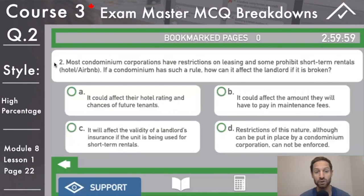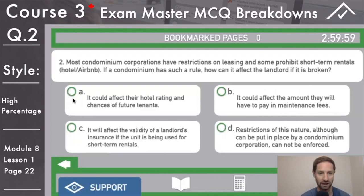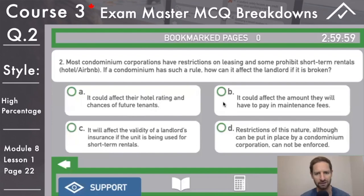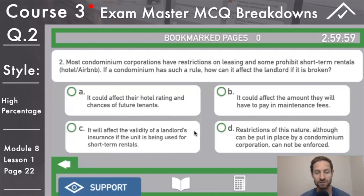Question two, top left, deep breath. Most common condominium corporations have restrictions on leasing and some prohibit short-term rentals — hotels slash Airbnb. If a condominium has such a rule, how can it affect the landlord if it is broken? A: it could affect their hotel rating and chances of future tenants — eliminate that. B: it could affect the amount they will have to pay in maintenance fees. This would not be a penalty — if they found out you were having an Airbnb and it's not allowed, they wouldn't jack up your maintenance fees, so eliminate. C: it will affect the validity of a landlord's insurance if the unit is being used for short-term rentals — this sounds like a possible penalty, leave it hovered over. D: restrictions of this nature, although can be put in place by a condominium corporation, cannot be enforced. They can be enforced — so eliminate. The answer is C.